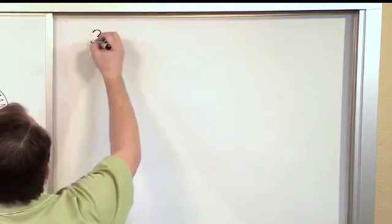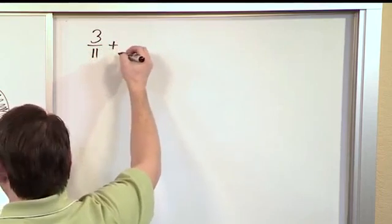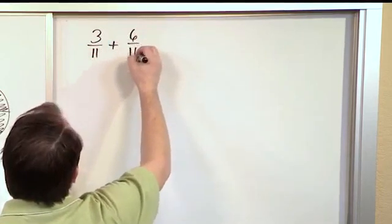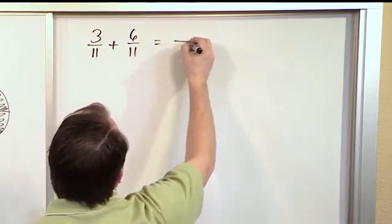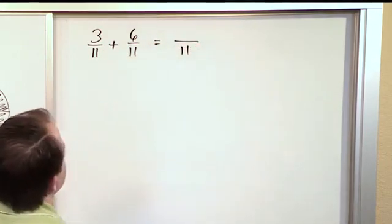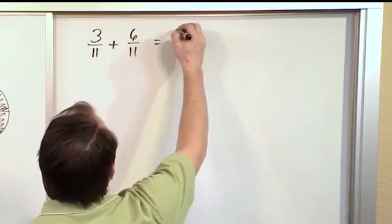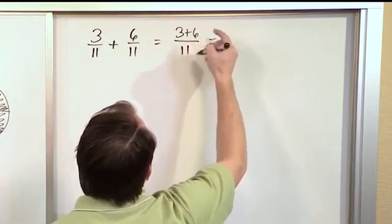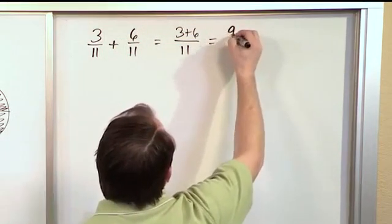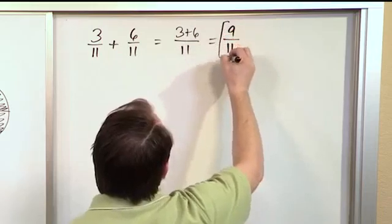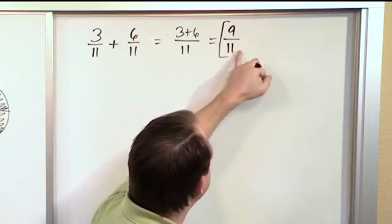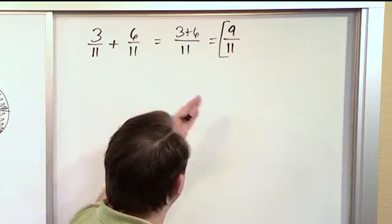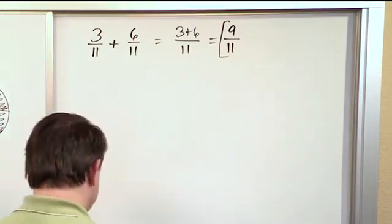Now what if we have something like 3/11 and we add to it 6/11? First thing you check, is the denominator the same? In this case it is, so we just keep the 11 on the bottom. Now we can add the numerators. 3 plus 6. 3 plus 6 is 9. You just keep it over 11 and there you go. And you can check and see, can I divide the top or the bottom by a number where both will go evenly and I can't do that. So that's already simplified.